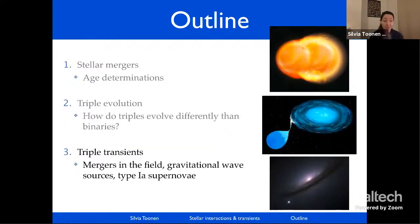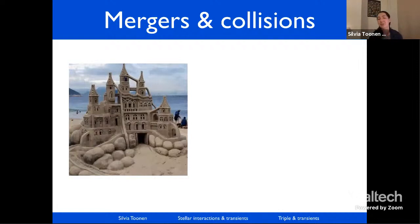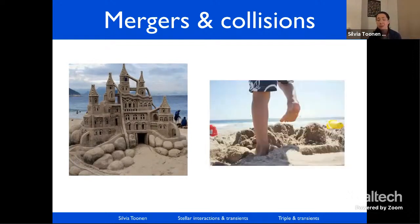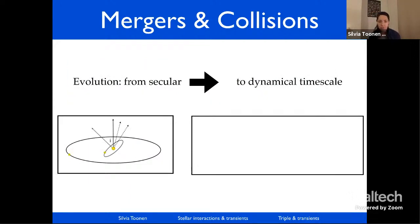Now I'm going to the last part of my talk: connecting triples back to transients. One very efficient way to produce mergers and collisions is by having these systems evolve from one dynamical regime to another — from a hierarchical system toward a more chaotic dynamical evolution.